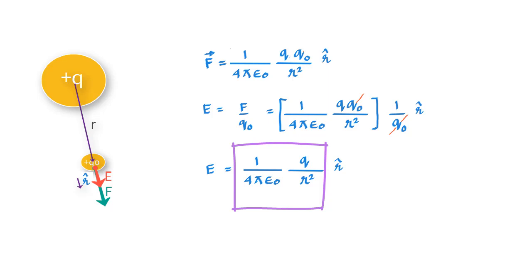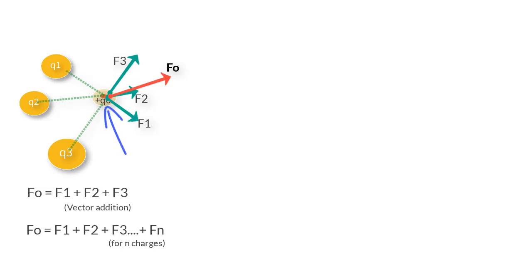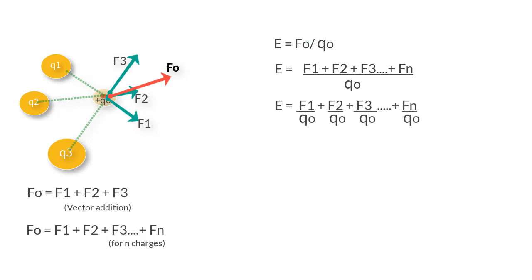So let's ask ourselves, what if there are several charges and we are asked to find the electric field E at a point due to this collection of charges? In such a case, we first find the vector sum of forces acting on the test charge due to all charges at that point. If this vector sum is F0, then we can find the net E at this point by dividing F0 by Q0, giving E equals F1 over Q0 plus F2 over Q0 plus F3 over Q0 and so on till Fn over Q0.